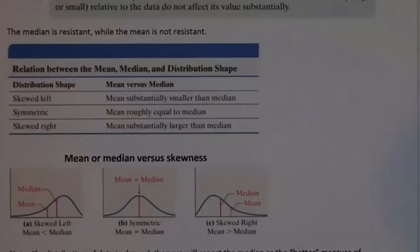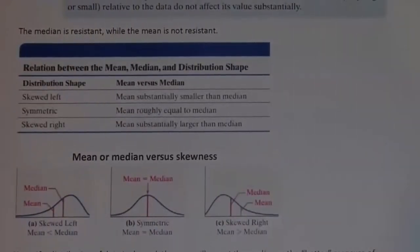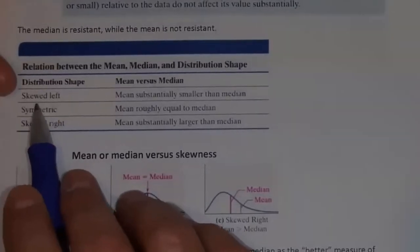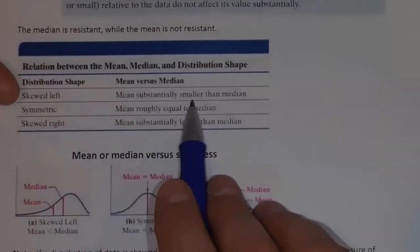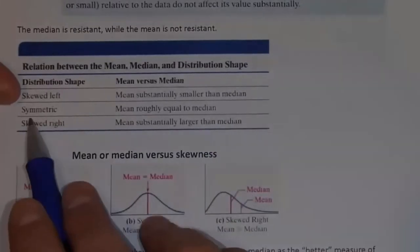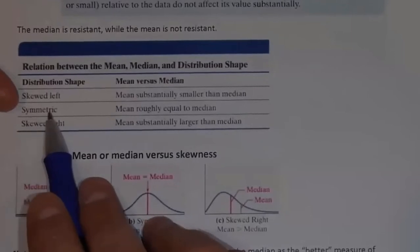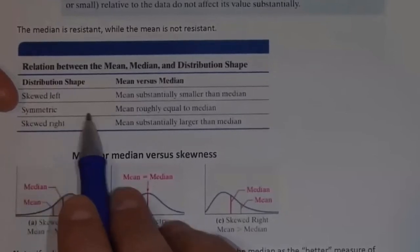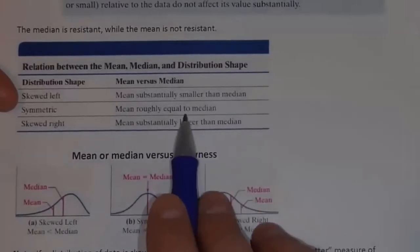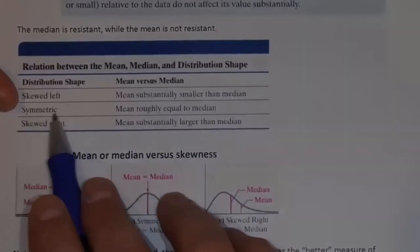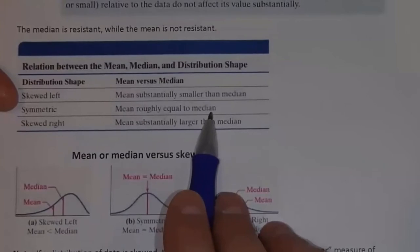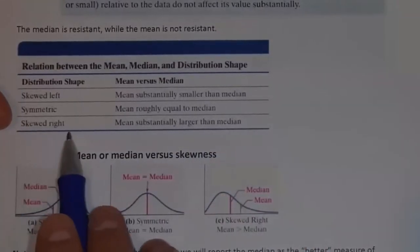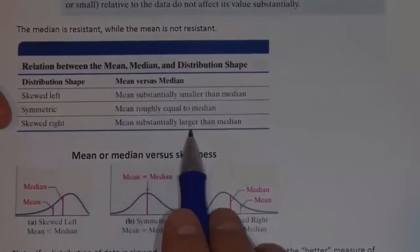Often we'll give more than one measure. Thinking about the mean versus the median: if we have a distribution that's skewed left, the mean is generally going to be substantially smaller than the median. If the distribution is symmetric — bell-shaped or uniform — the mean will roughly equal the median. If the distribution is skewed right, the mean will generally be substantially larger than the median.